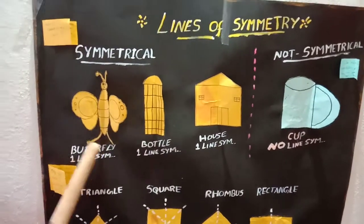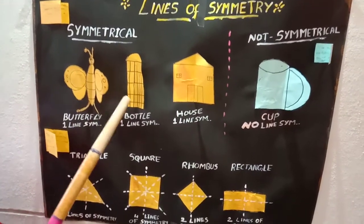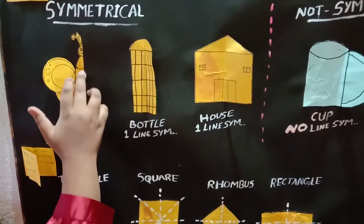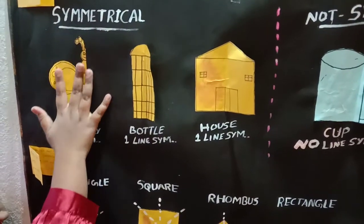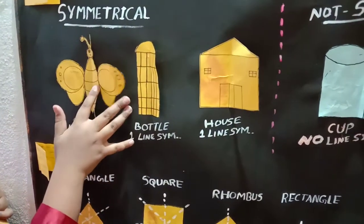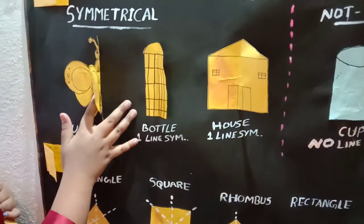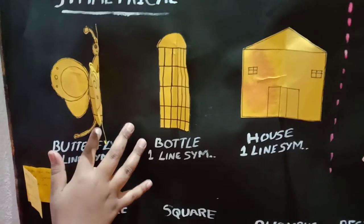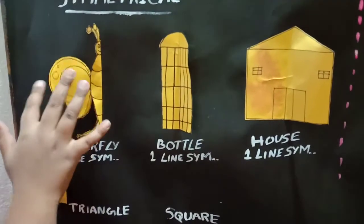Now let's go to the example like butterfly. When I fold it, it is overlapping each other and it is divided into identical halves. So it is symmetrical. So butterfly has one line of symmetry.